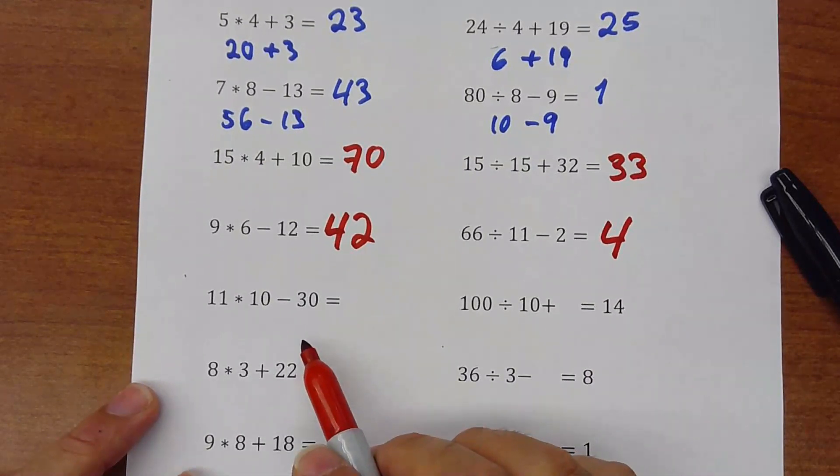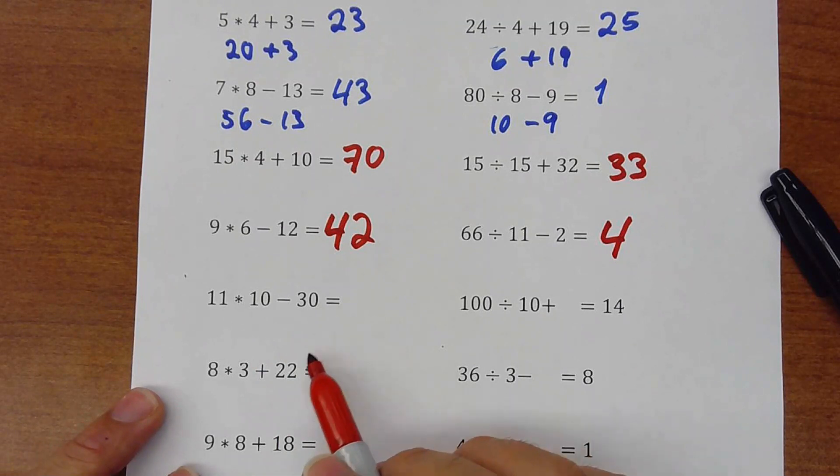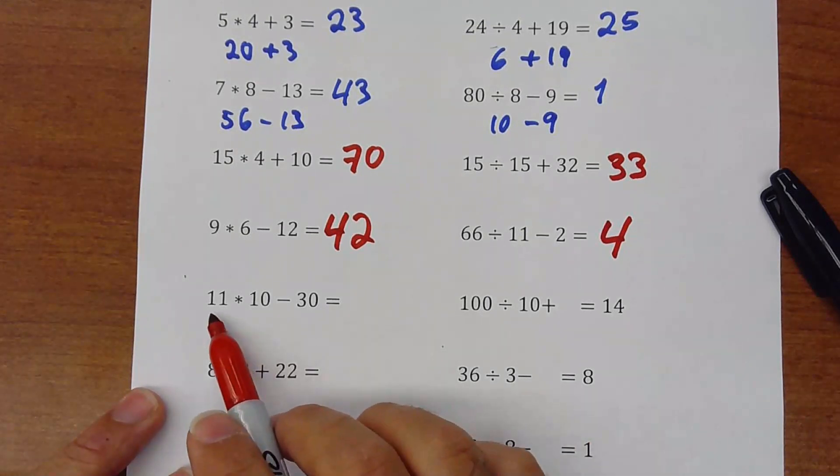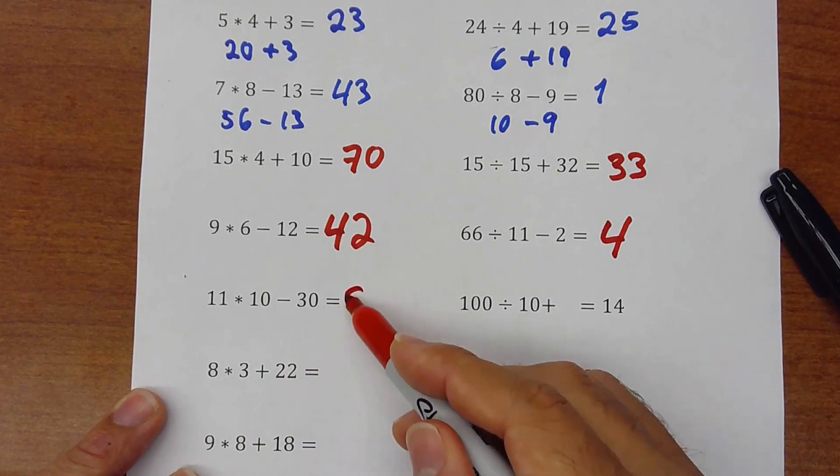Another thing I recommend you is to pause the video, try to do it by yourself and then check your answer. That would be 110 minus 30, that would be just 80.